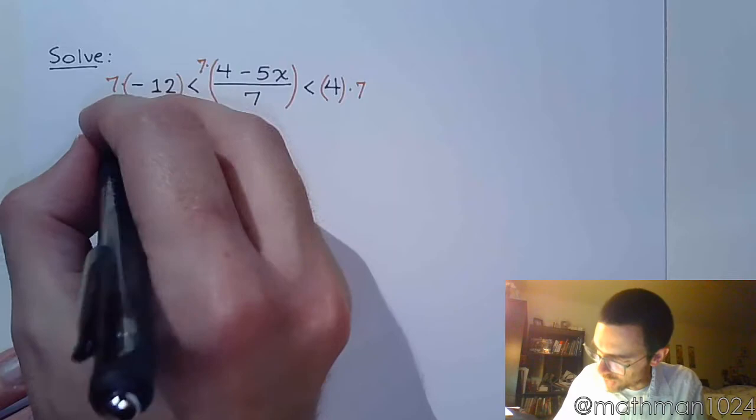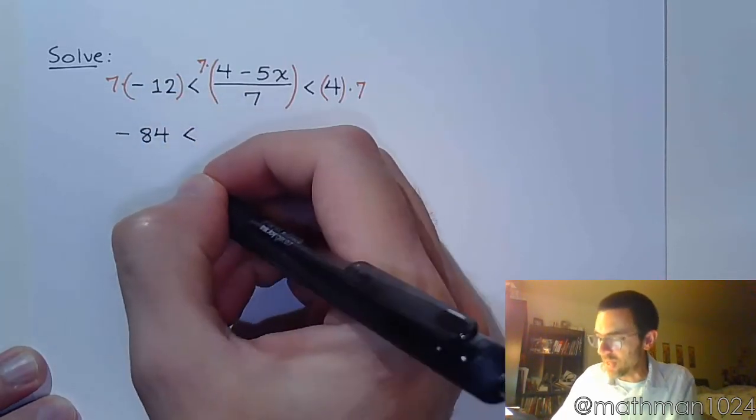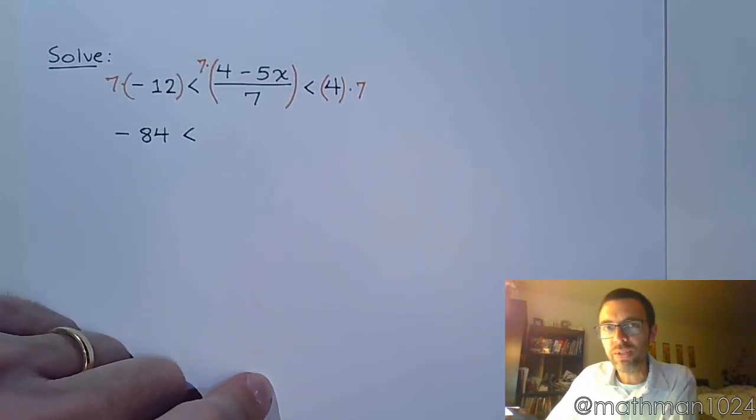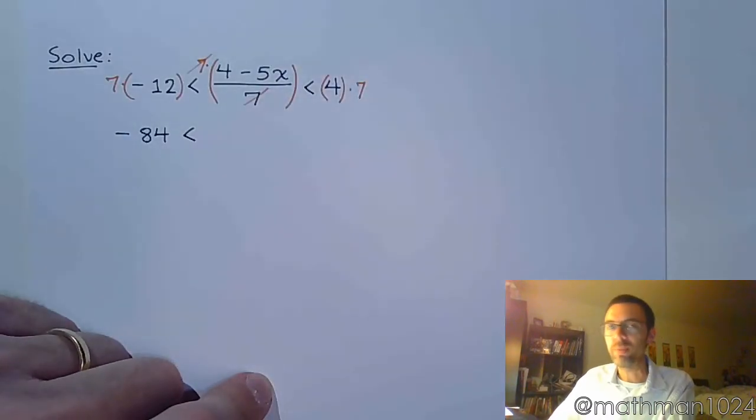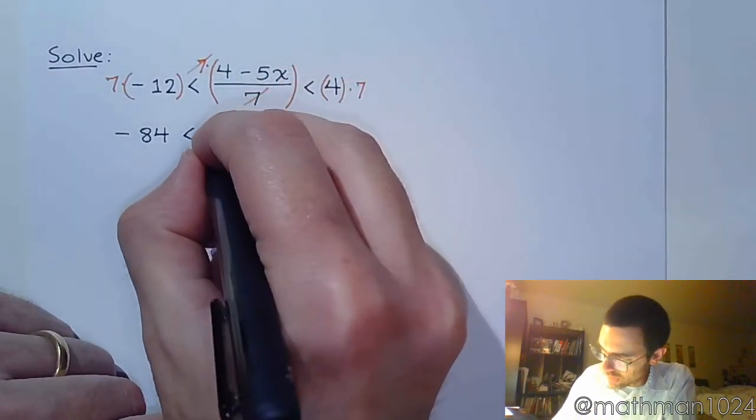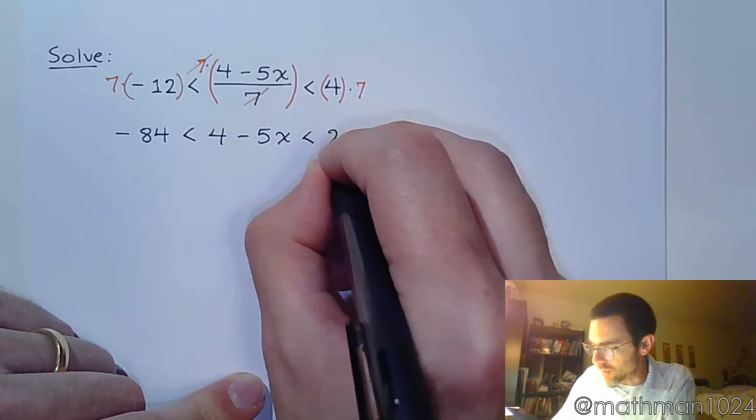So, here we end up with negative 84, is less than, by multiplying times 7 in the middle, the 7 reduces with that denominator of 7. I mean, that's the whole point of multiplying times 7. And then we have 4 minus 5x is less than 28.